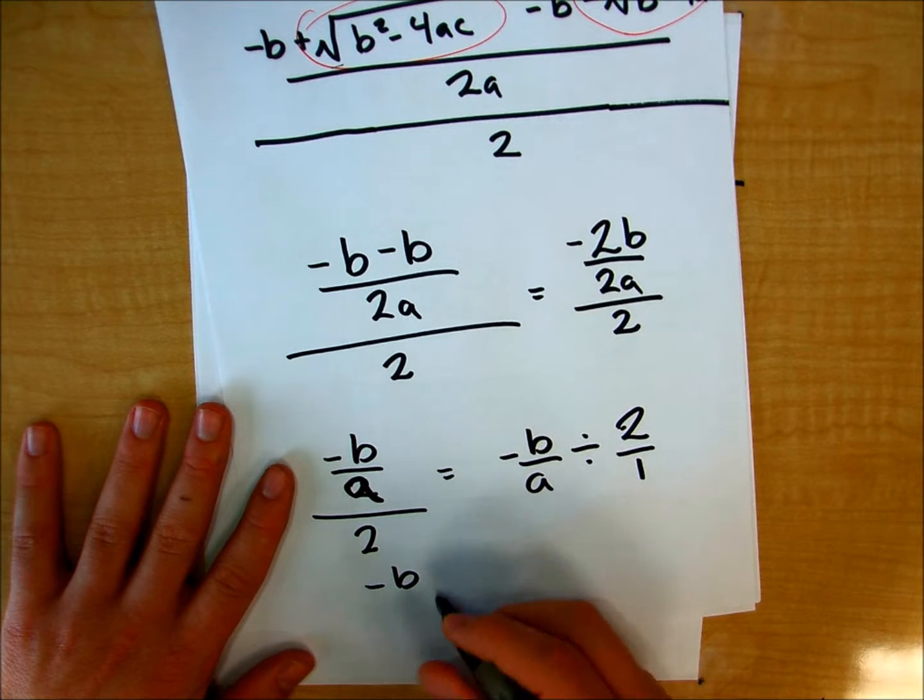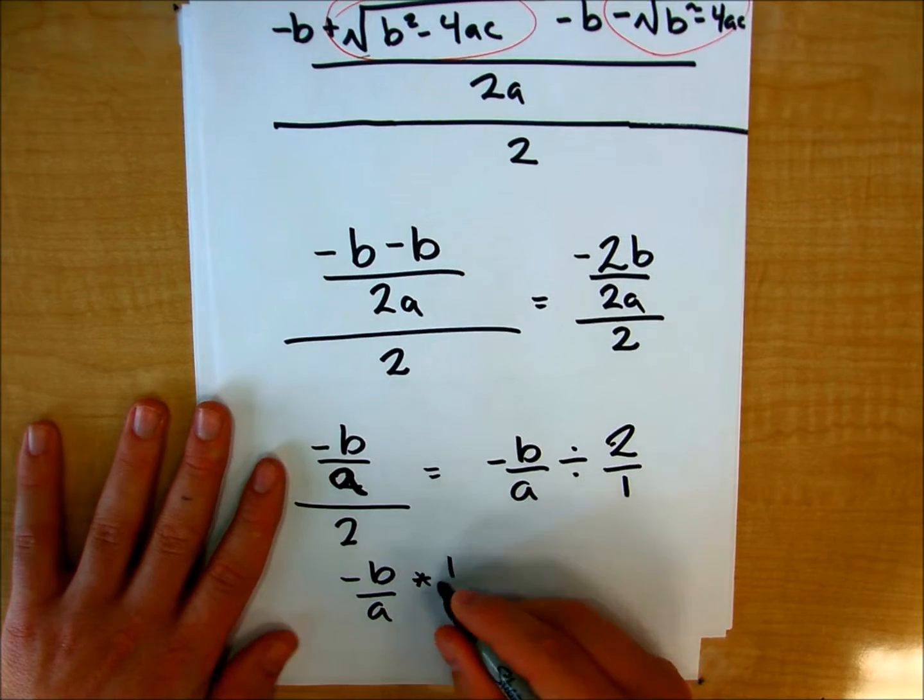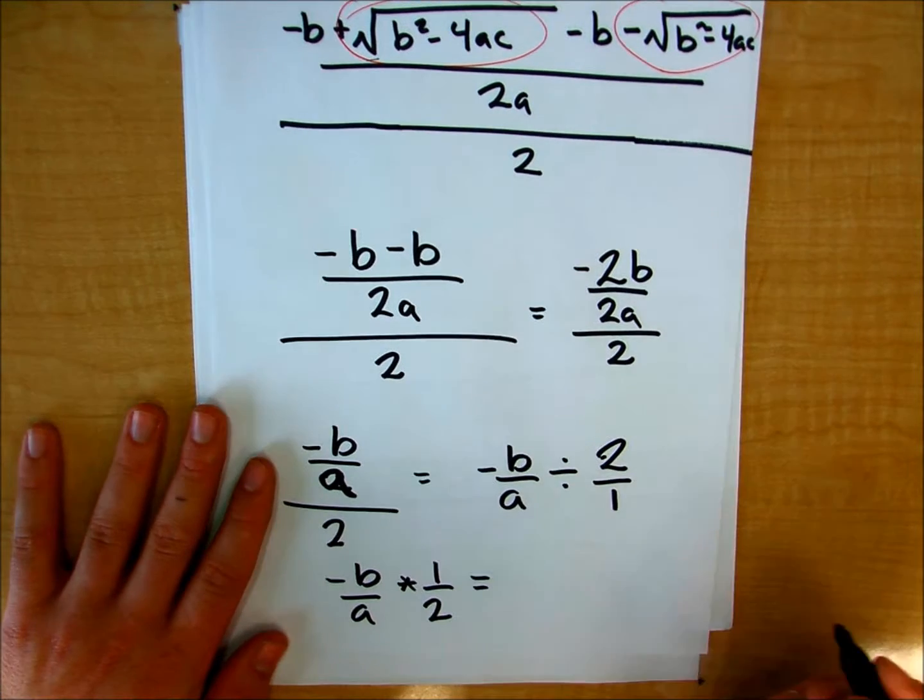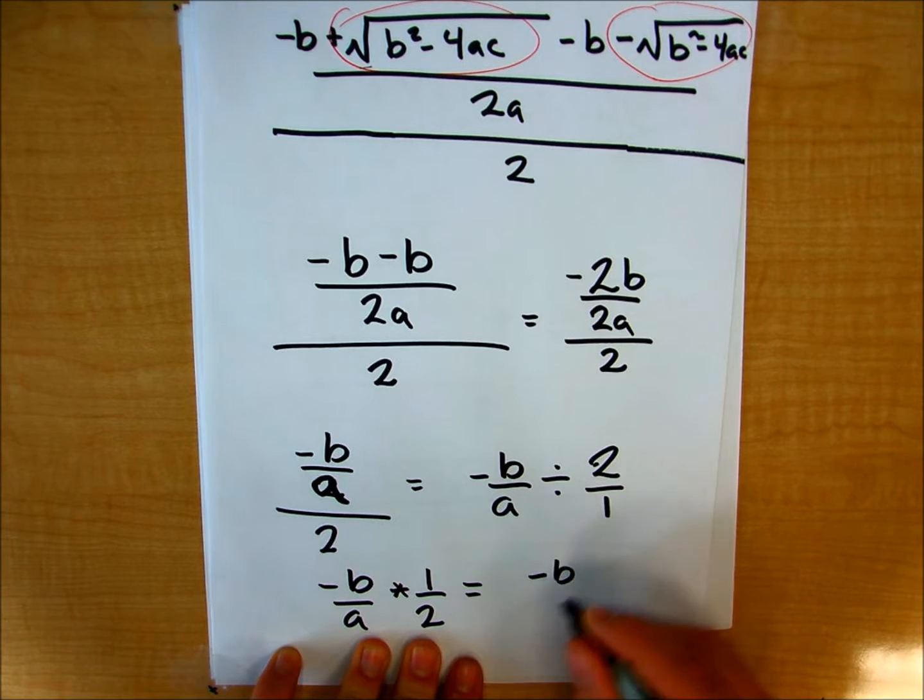Or I can think of it as negative b times, remember, keep, change, flip, times 1 over 2, which is the equivalent of, I'll just multiply this out, negative b all over 2a.